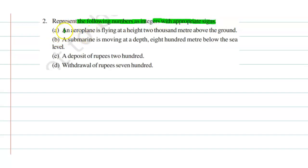First part is, an aeroplane is flying at a height of 2000 meters above the ground. So here is above, so we will write plus 2000 meters.